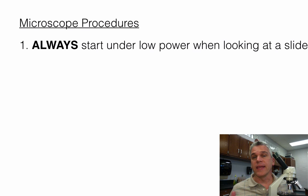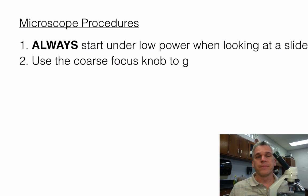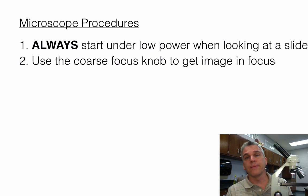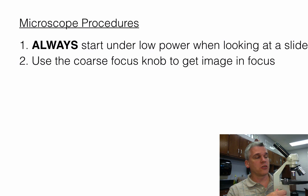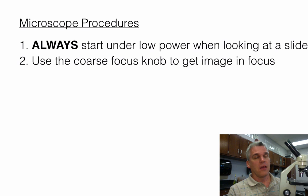Use the coarse focus knob to get the image in focus. We have two knobs: the larger one is the coarse focus — watch the stage go up and down as I turn it. The smaller knob is the fine focus; when I turn it back and forth the stage moves up and down slightly. This helps us to really get things in good focus.